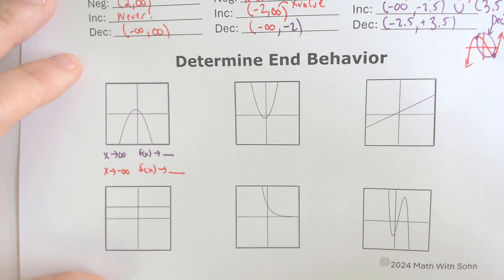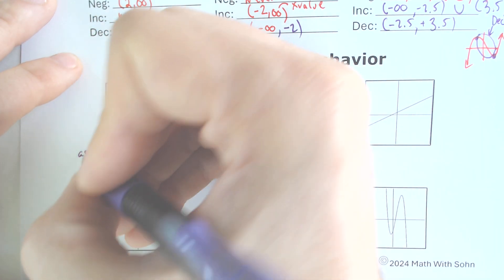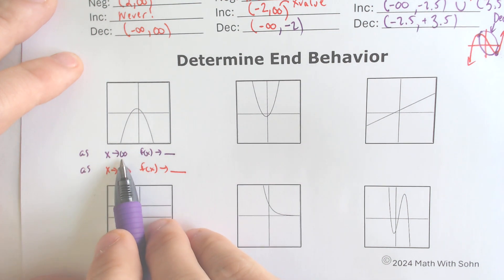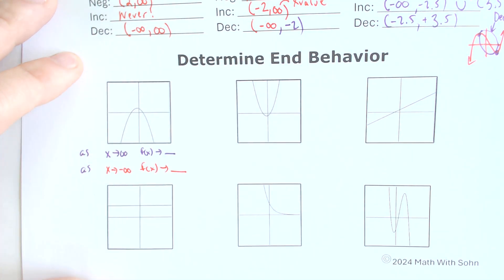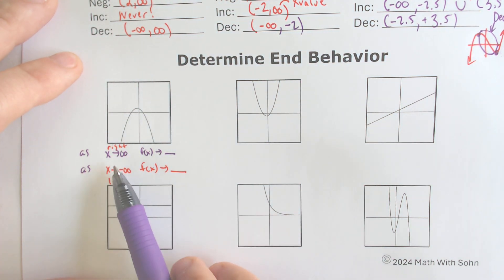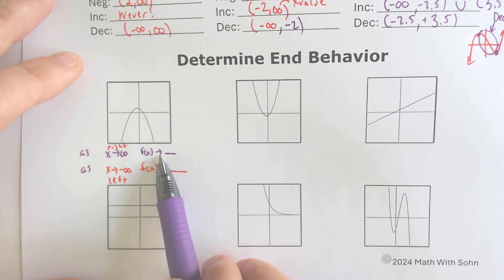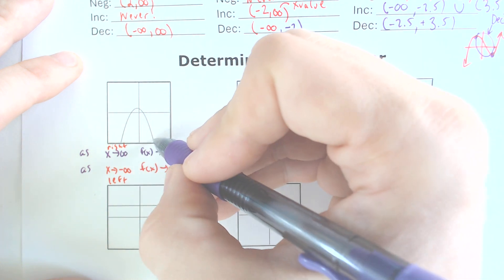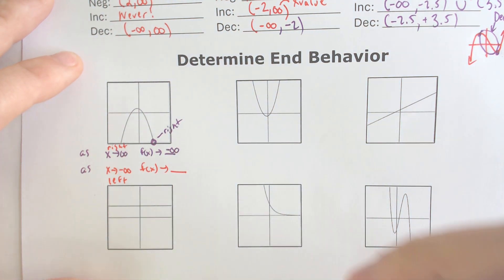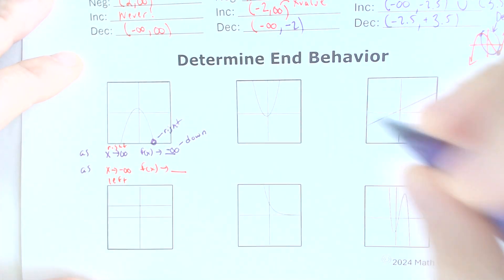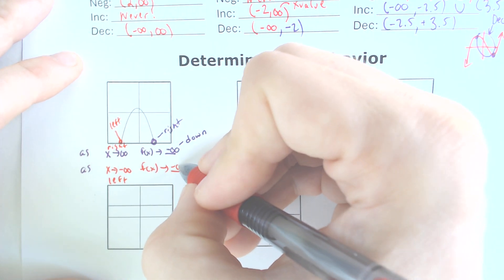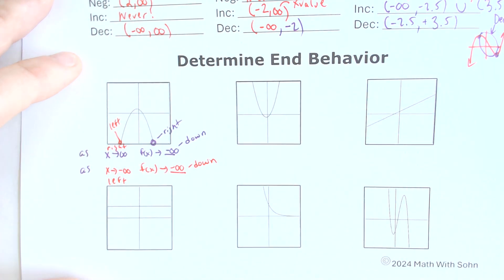You'll see it in different words sometimes. Positive infinity for x is the right side of the graph, and negative infinity for x is the left side. On the right side, all you have to answer is: are you going up or down? For this first example, on the right side we are going down — so that's negative infinity. On the left side, we are also going down — so that's also negative infinity.